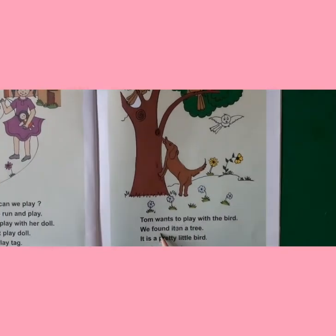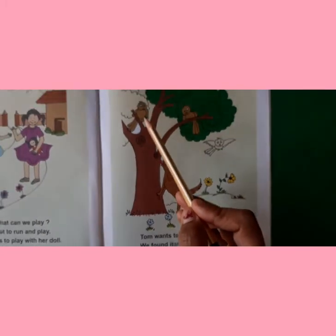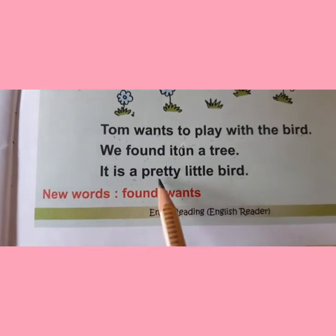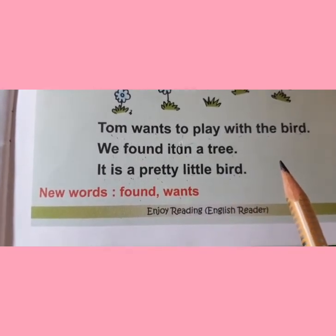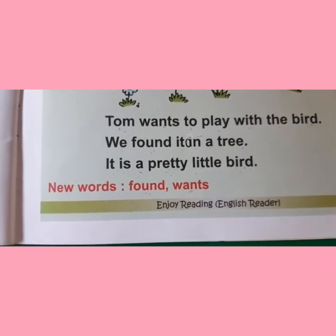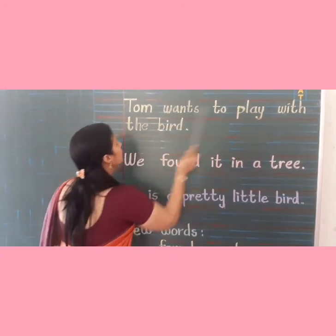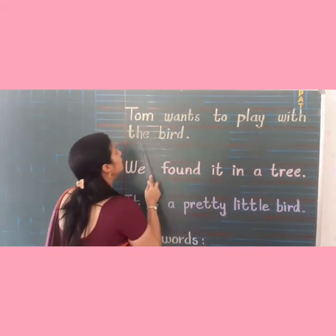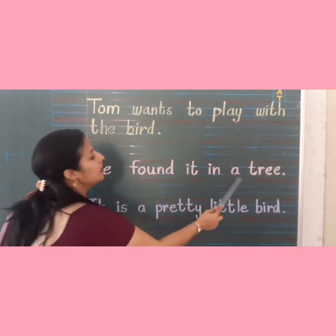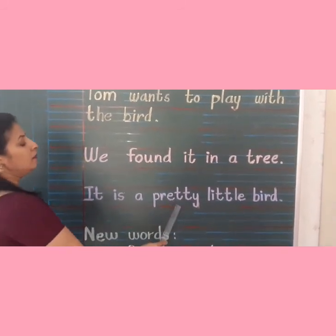Next sentence: It is a pretty little bird. Now let's do reading practice from the board. Tom wants to play with the bird. We found it in a tree. It is a pretty little bird.